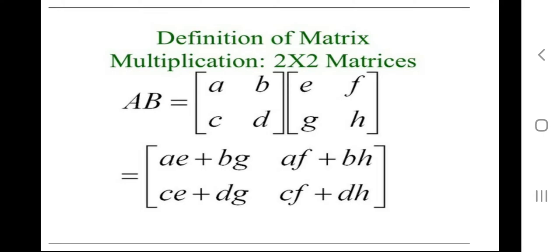The second row of A is [c, d] and the first column of B is [e, g], giving c×e plus d×g. Then the second row multiplied by the second column of B gives c×f plus d×h. After multiplying and adding, we obtain the resultant matrix.